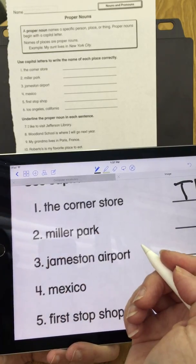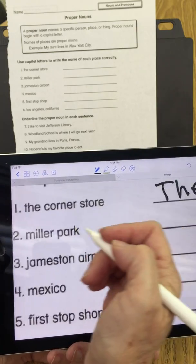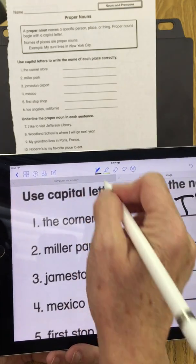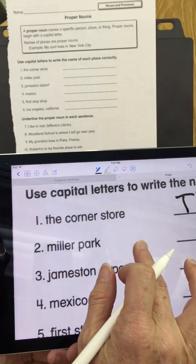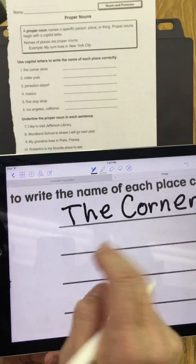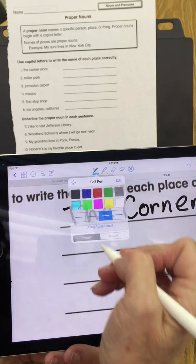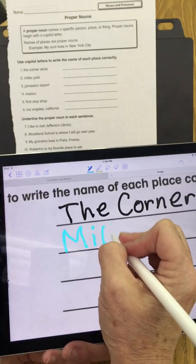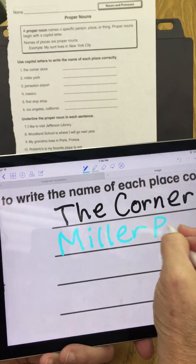If you just had a stylus, it will recognize when your fingers touch, so you have to turn on and off the stylus as you move around. So Miller Park is the next one. I'm going to write that in blue. Miller Park.